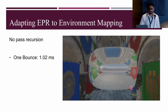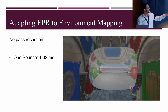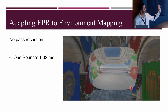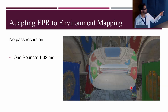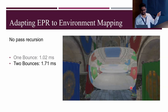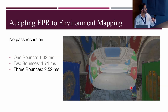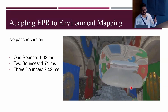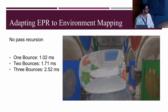This approach also enables recursive reflections. In this simple sponsor scene, we record the deferred shading time for multiple bounce reflections: first bounce, second bounce, and third bounce — all accomplished without any additional geometry passes.